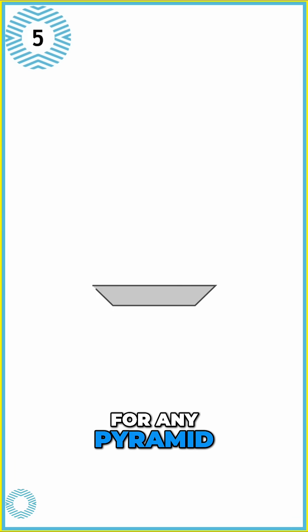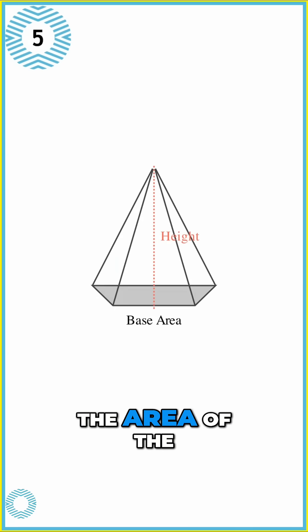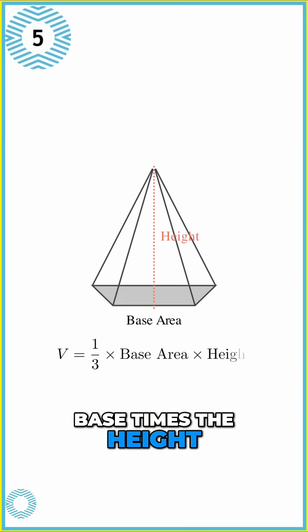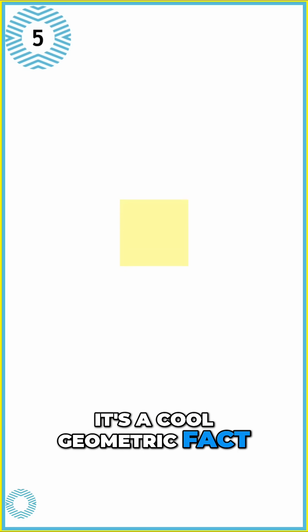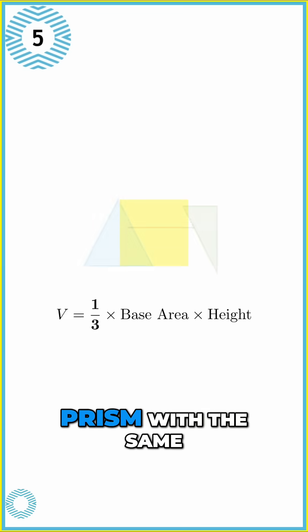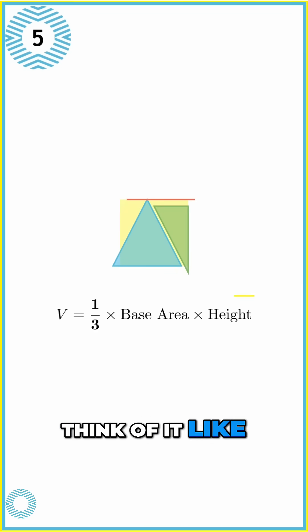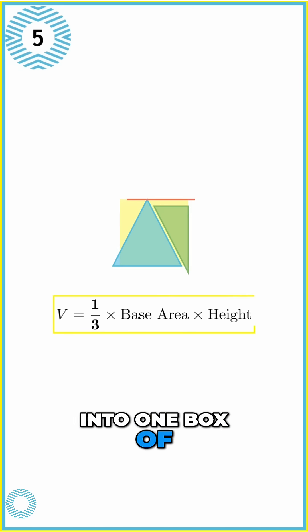For any pyramid, the volume has a specific formula: Volume equals one-third times the area of the base times the height. Why one-third? It's a cool geometric fact. A pyramid's volume is exactly one-third of the prism with the same base and height. Think of it like fitting three pyramids perfectly into one box of the same base and height.